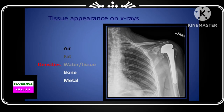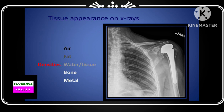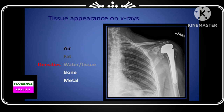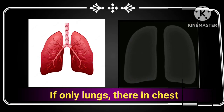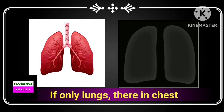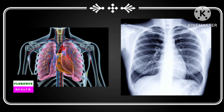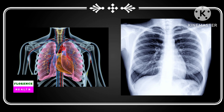On an X-ray plate, room air outside the patient body is purely black. Air inside soft tissue — that is, inside the lung — is grayish. Water and soft tissue are grayish, bone and calcium are white, and metal is purely or abnormally white. You should be acquainted with the normal X-ray so that you can detect the abnormal one.